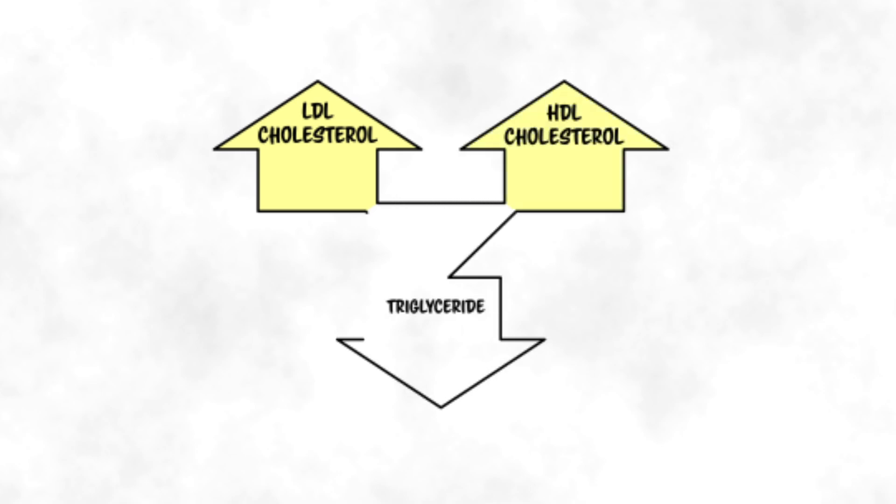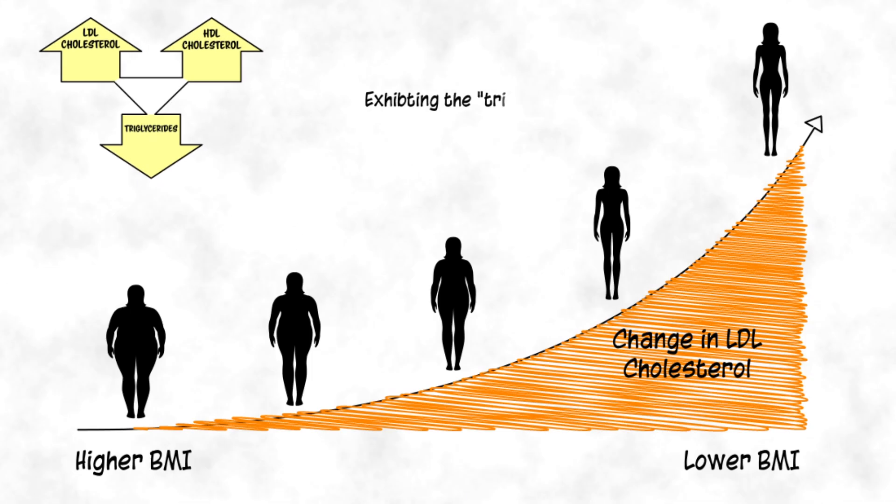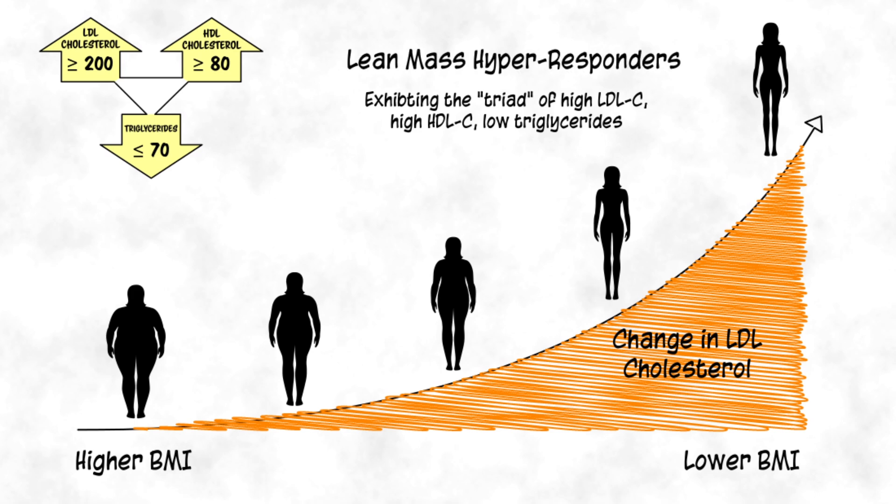Notably, when these increases in LDL do occur, they are often further associated with increases in HDL cholesterol alongside low levels of triglycerides. This triad of high LDL and HDL cholesterol with low triglycerides is most pronounced in a phenotype termed lean mass hyperresponders.